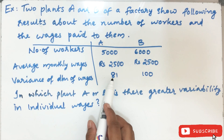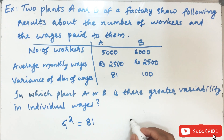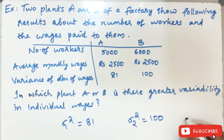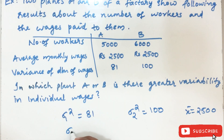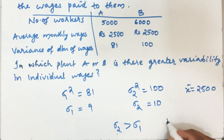Here, for Plant A, variance σ₁² = 81, and for Plant B, variance σ₂² = 100. Since both plants have the same average (x̄ = 2,500), we compare variances directly. Plant B has greater variance, so σ₁ = 9 and σ₂ = 10. Since σ₂ > σ₁, Plant B has more variability in wages.